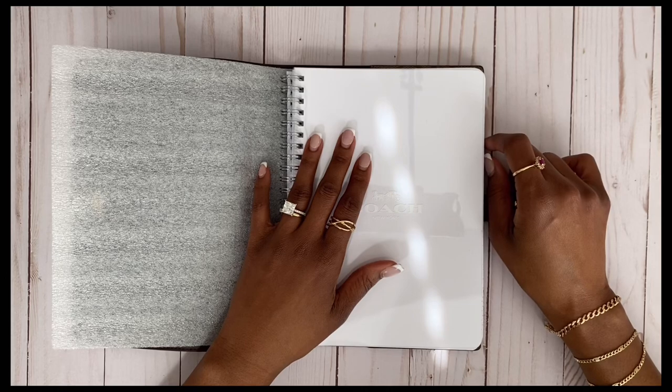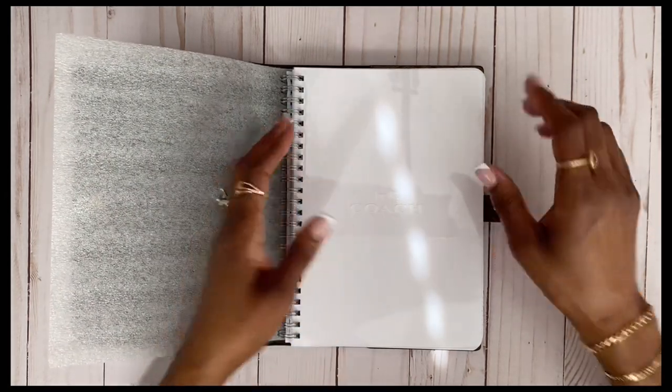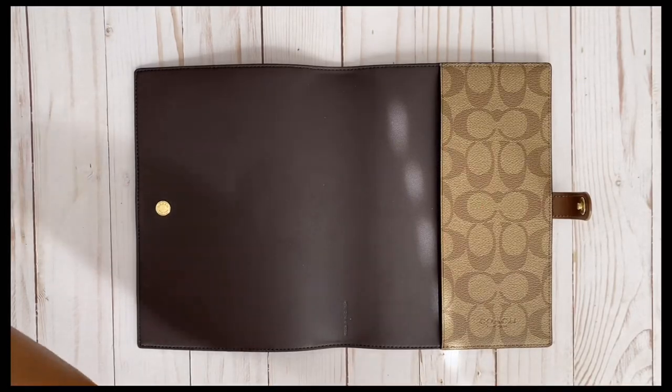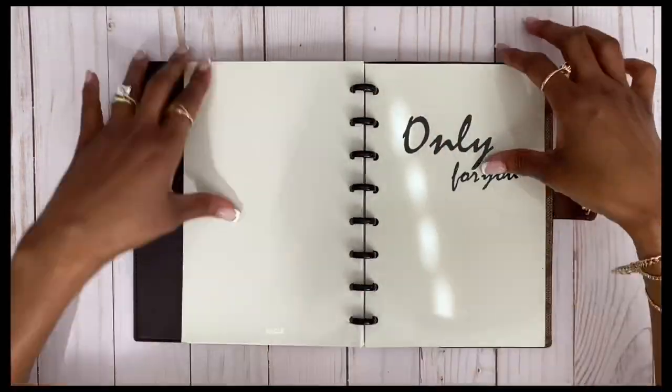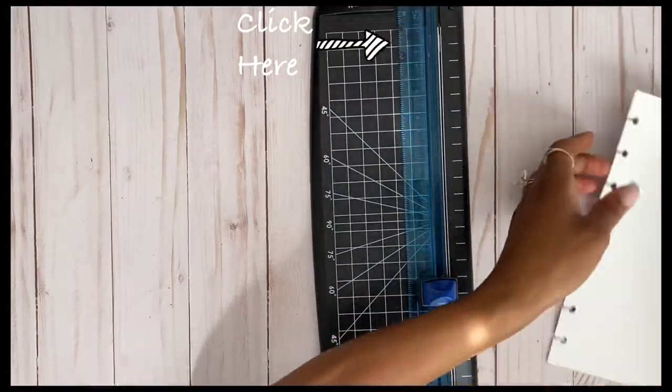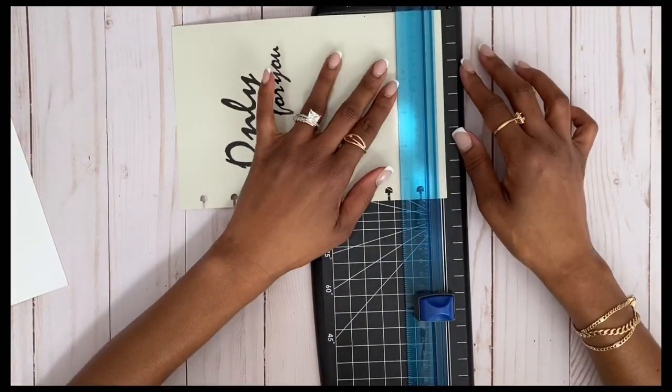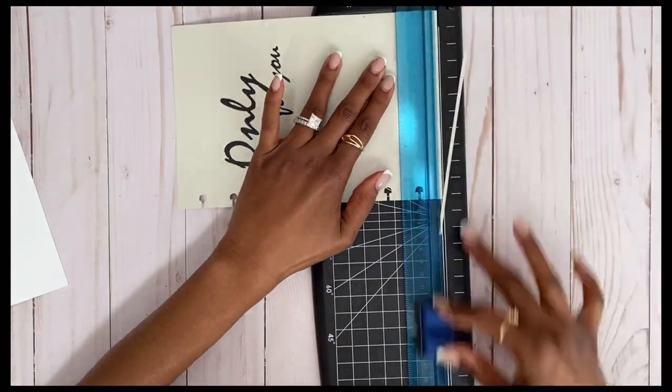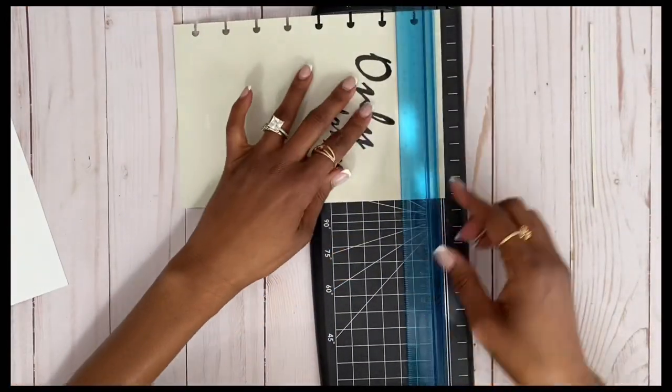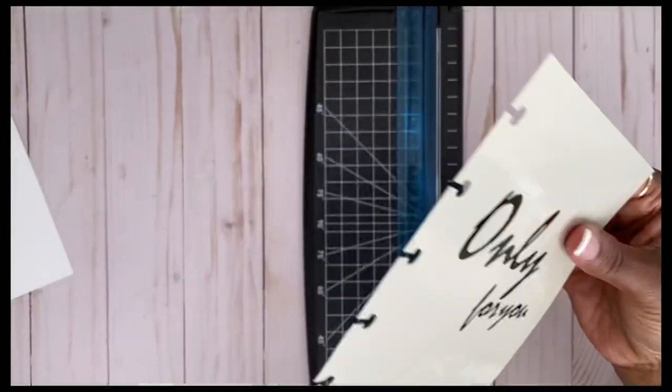So I removed the spiral notebook from it, and I'm taking these covers from the disc-bound planner that I got from Amazon. I'm cutting it down to size. I'm just eyeballing it right now, making sure that everything is as straight as possible, and I'm going to do this to both sides.